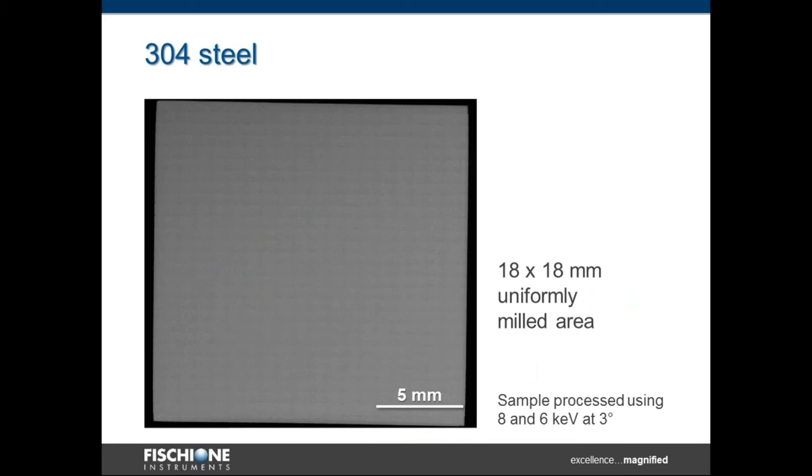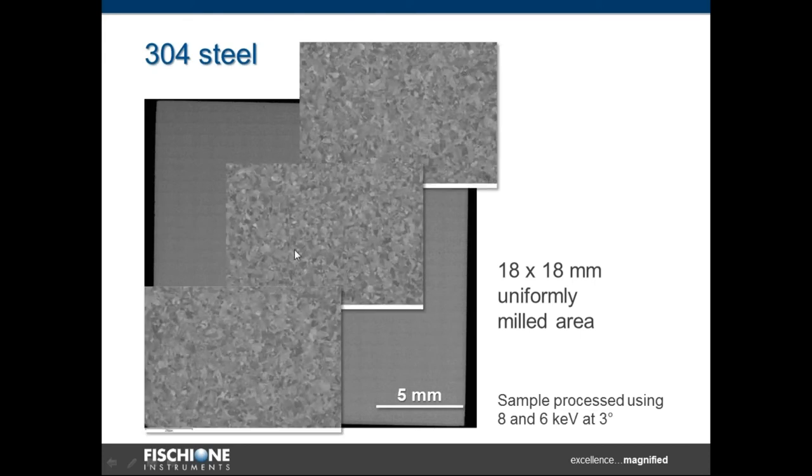The next example is austenitic steel. You can see here the sample that is 18 by 18 millimeters. We milled it by try-on mill and collected the images from whole area, then stitched them together. If you zoom at any place of that sample, a big sample, you will see that structure is very uniform. You can see very easily the austenitic steel structure, distinguish all the grains and see that milling was uniform across all the samples from the center to any corner or edge of that sample.